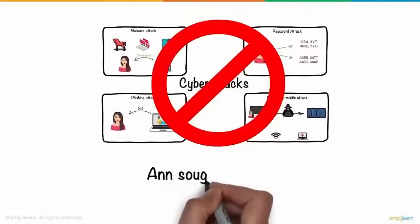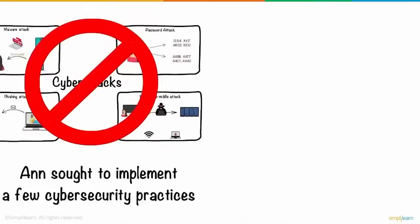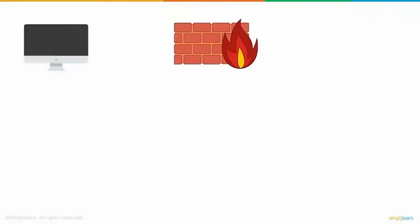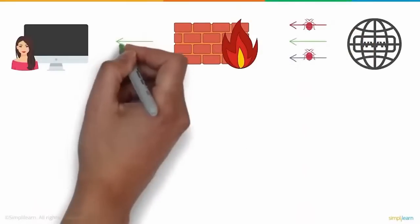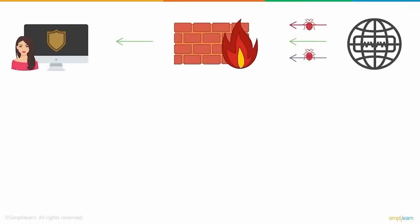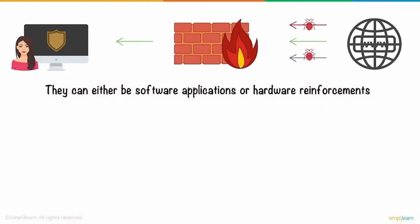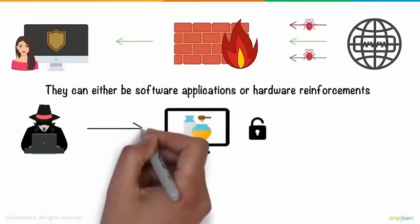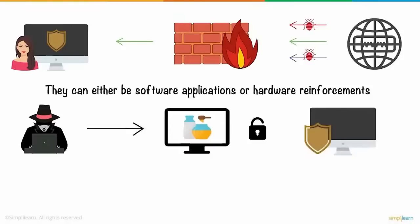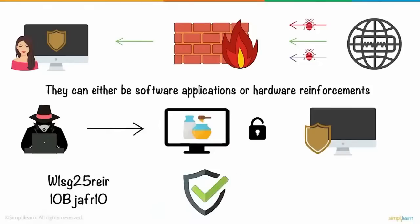To prevent future cyber attacks, Anne implemented cybersecurity practices. First, she installed a firewall — a virtual wall between her computer and the internet — which filters incoming and outgoing traffic and can be a software application or hardware reinforcement. Second, she implemented honeypots: dummy computer systems made to look vulnerable to attract and deceive attackers, defending the real system. She also used unique alphanumeric passwords, antivirus software, and started avoiding emails from unknown senders.